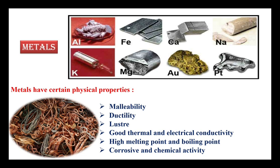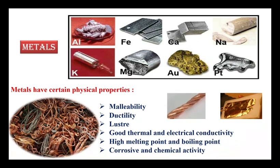Malleability means if we hammer metals continuously we can make them into a sheet — as you can see in the image showing gold metal being hammered. Ductility is the elongation of metal; we can make it like a wire or thread. So the elongation of metals is called ductility. These are the various physical properties expressed by metals.